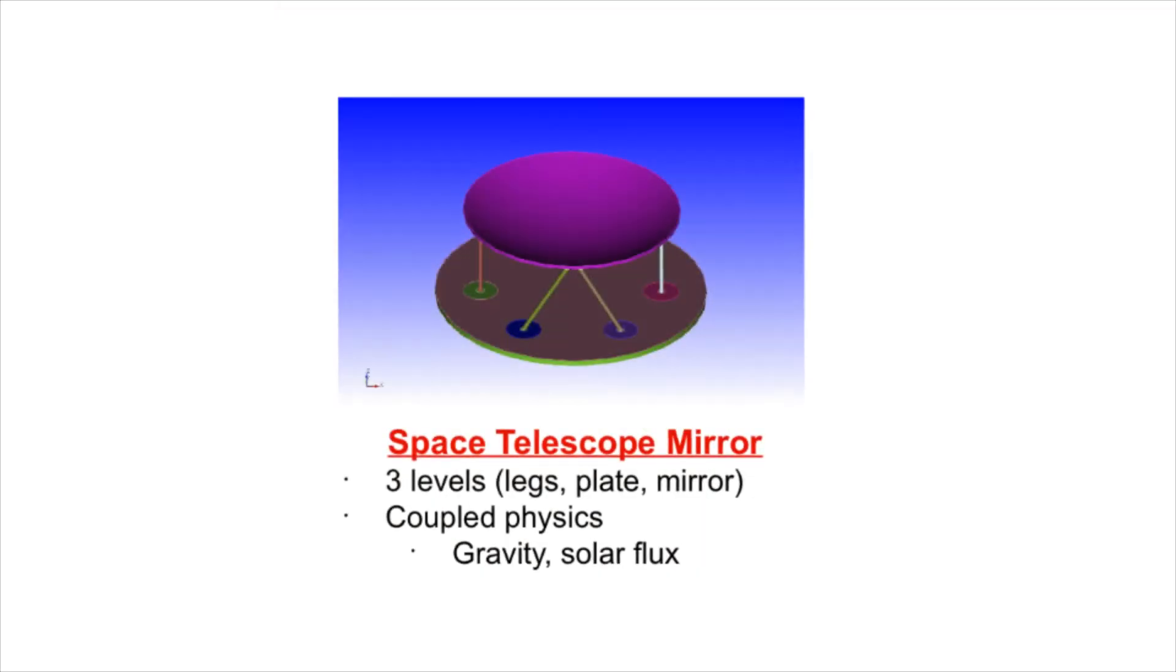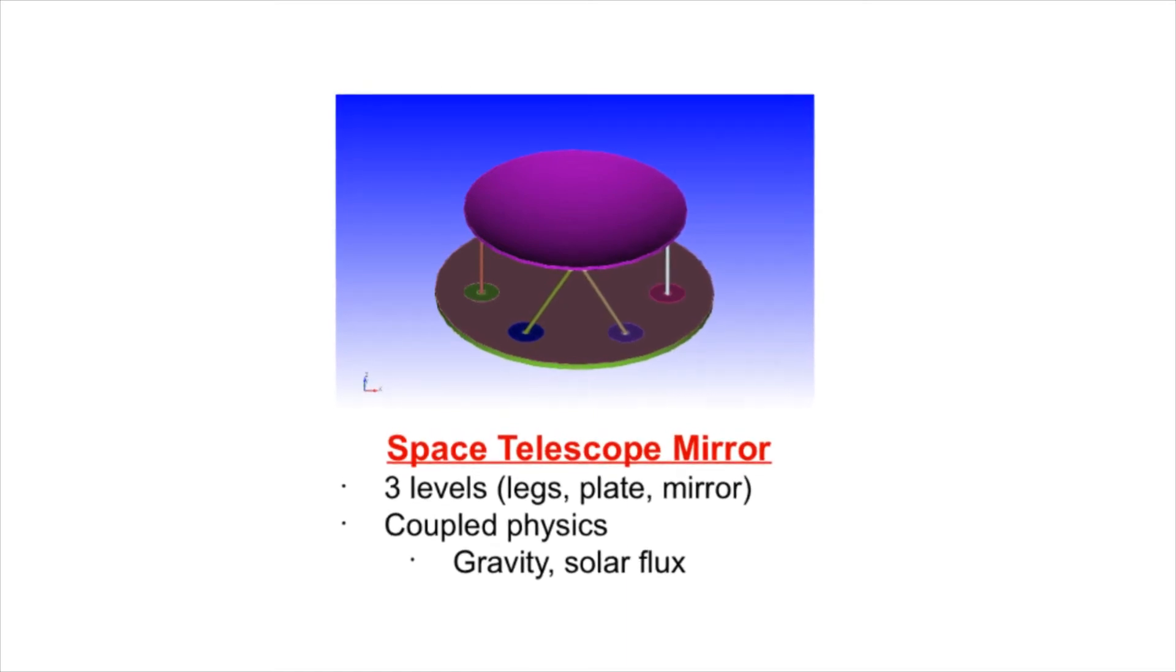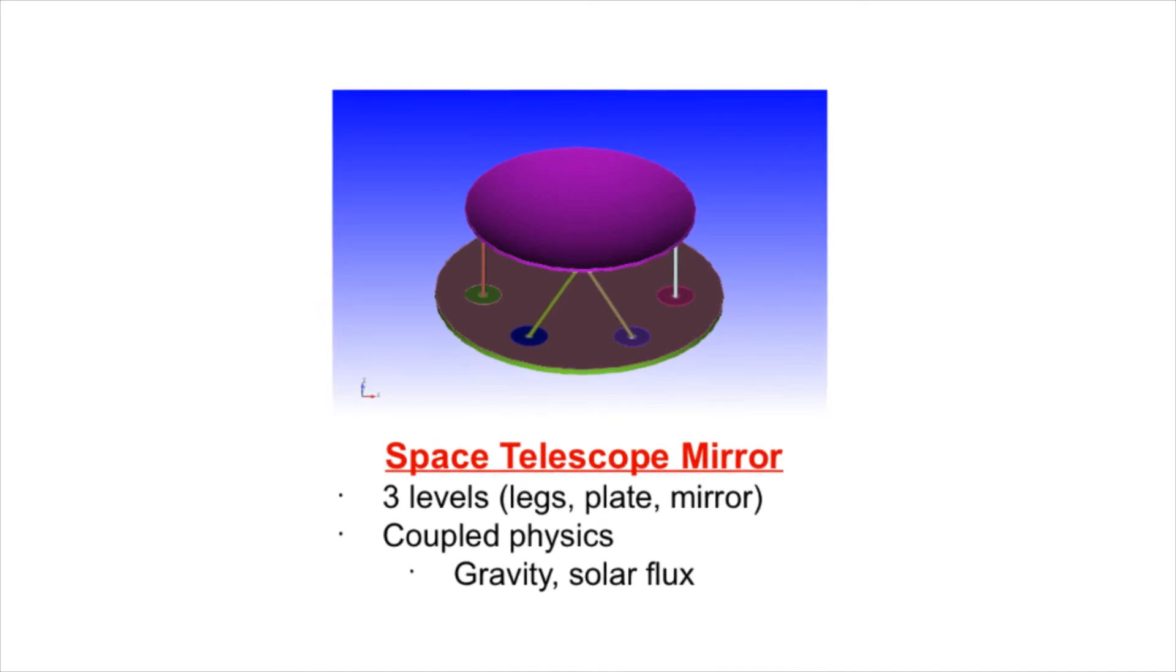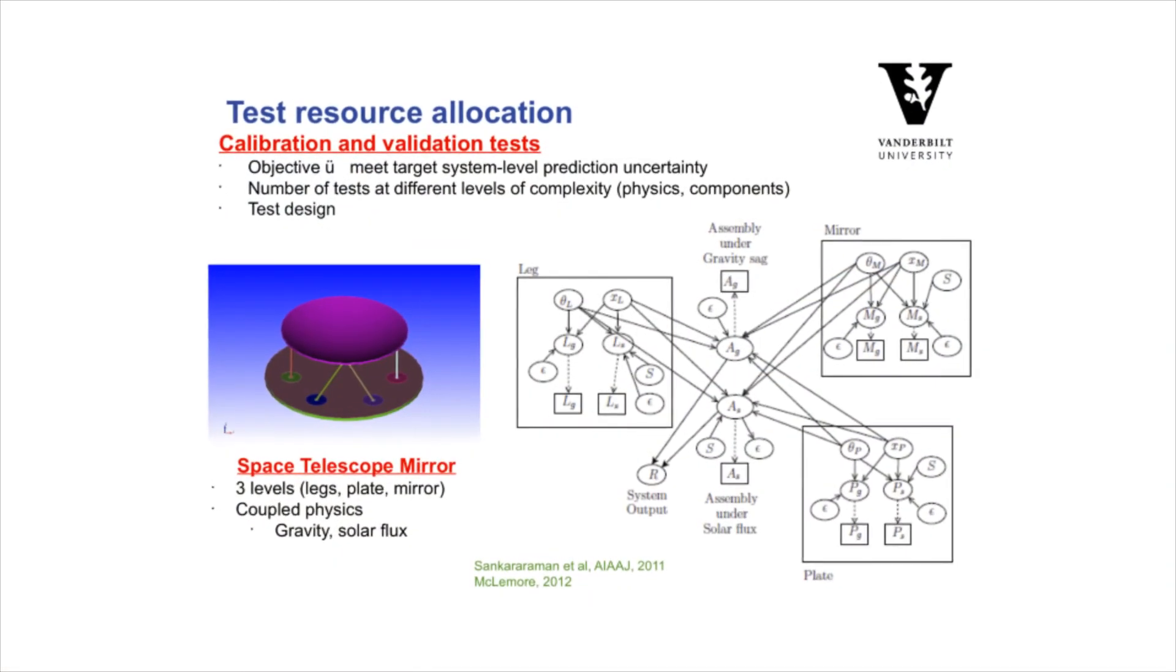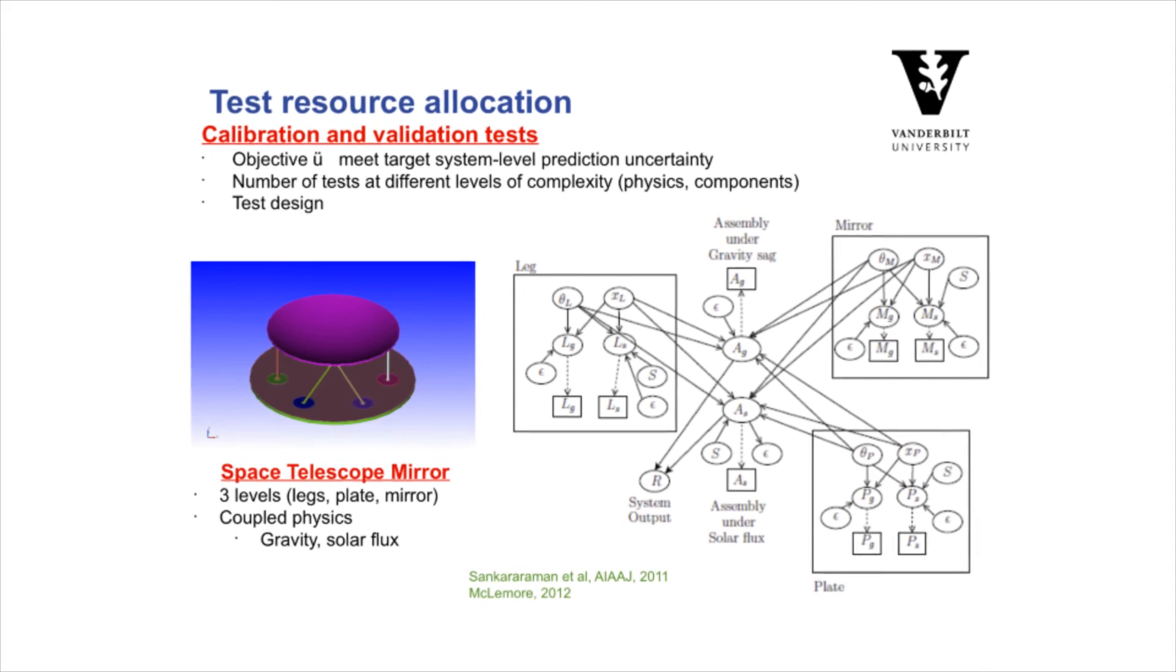We've more recently been working with NASA JPL on resource allocation techniques where we use Bayesian networks to connect all the different sources of information about the system. This is a multi-level system, going all the way from material to component to subsystem to system. You want to do as many full-scale system tests as possible, but your budget is very limited, so that's usually not possible. So you want to decide where to put your testing dollars. We've done a demonstration of this technique with the space telescope problem, and our student, Kyle McLemore, has just finished a master's thesis on this topic in collaboration with the Jet Propulsion Laboratory.